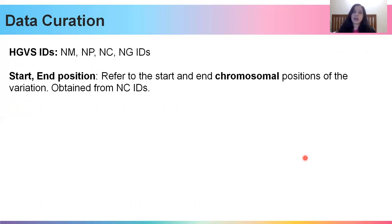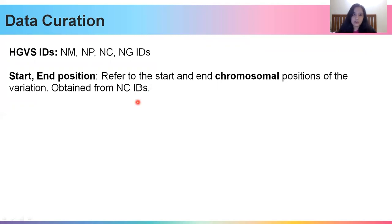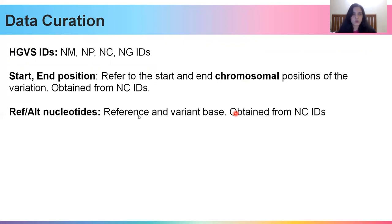Along with the HGVS IDs, we also need to collect the start and end position of the variant — its chromosomal position, represented by NC IDs in HGVS. An NC ID will tell you the chromosomal position and start position of your variant. You should also collect information on what reference and alternate nucleotides your variant involves, which can be obtained from the NC ID itself.